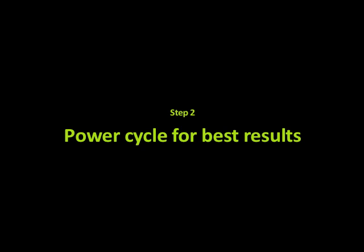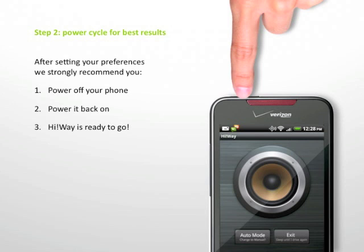Step 2: Power cycle for best results. After setting your preferences, we strongly recommend you power off your phone, power it back on, and Highway is ready to go.